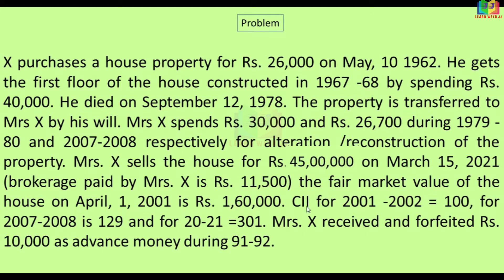The CII for the respective years — we have the Cost Inflation Index. Mrs. X received and forfeited advance money. In 1991-92, we have Rs. 10,000 advance money received and forfeited. Now we have to work through this problem.